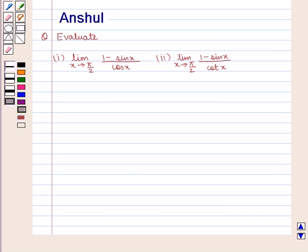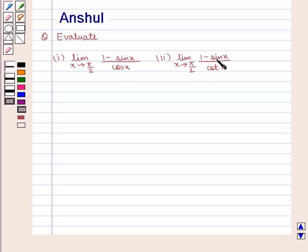Hello and welcome to the session. In this session we are going to discuss the following question: Evaluate. 1. Limit x tends to pi by 2, 1 minus sin x by cot x. 2. Limit x tends to pi by 2, 1 minus sin x by cot x.